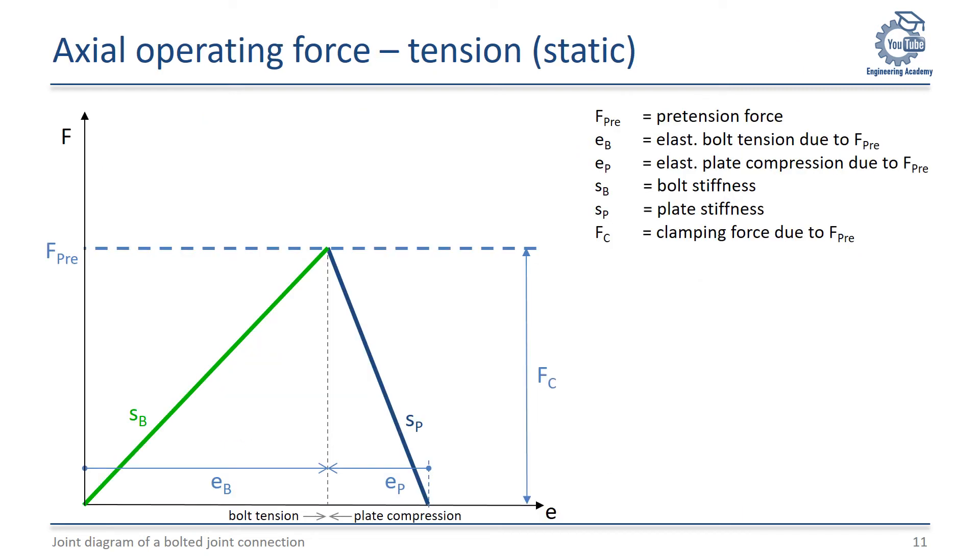When we put the additional elongation delta E into the joint diagram, we can see that the bolt is expanded by the value of EB plus delta E. Starting from their initial compression EP, the plates are decompressed by delta E. The area of bolt tension increases to the right. The area of plate compression decreases by the same amount.